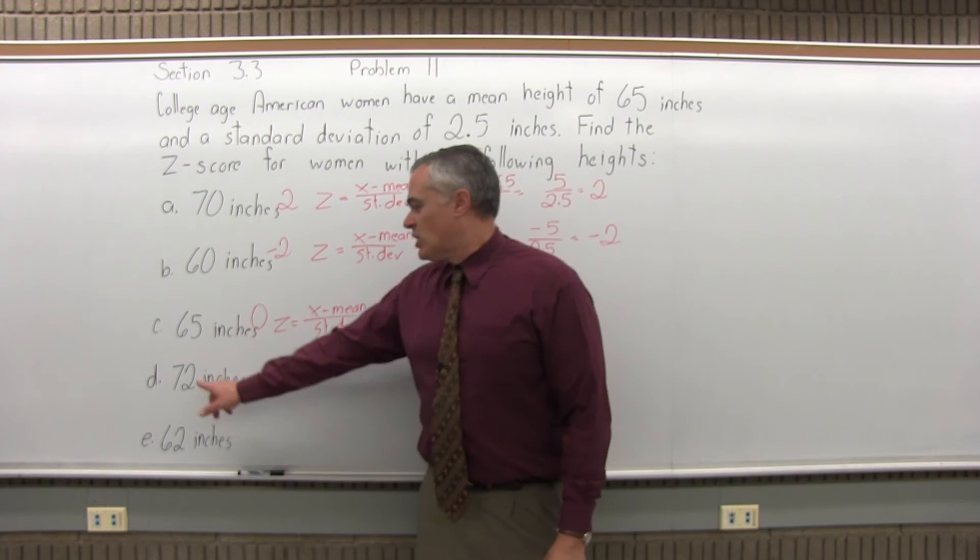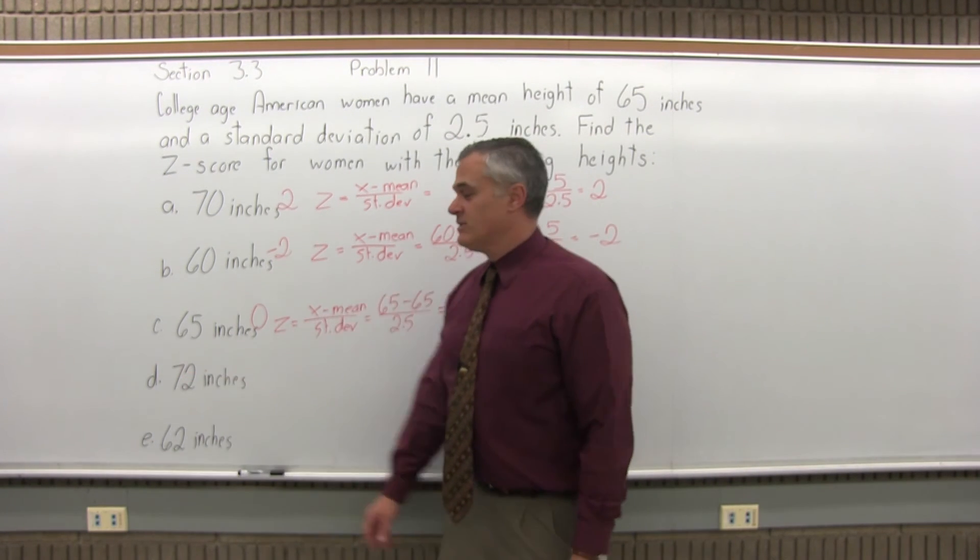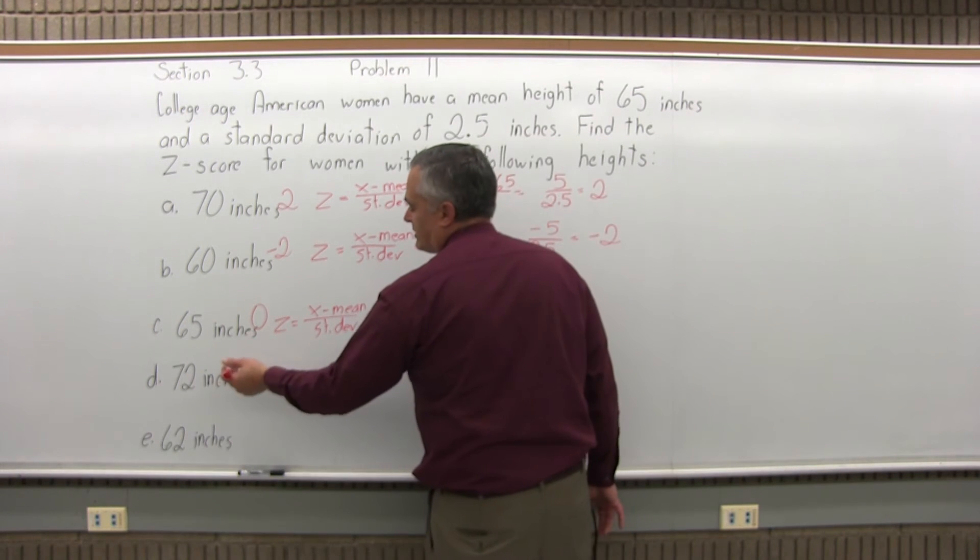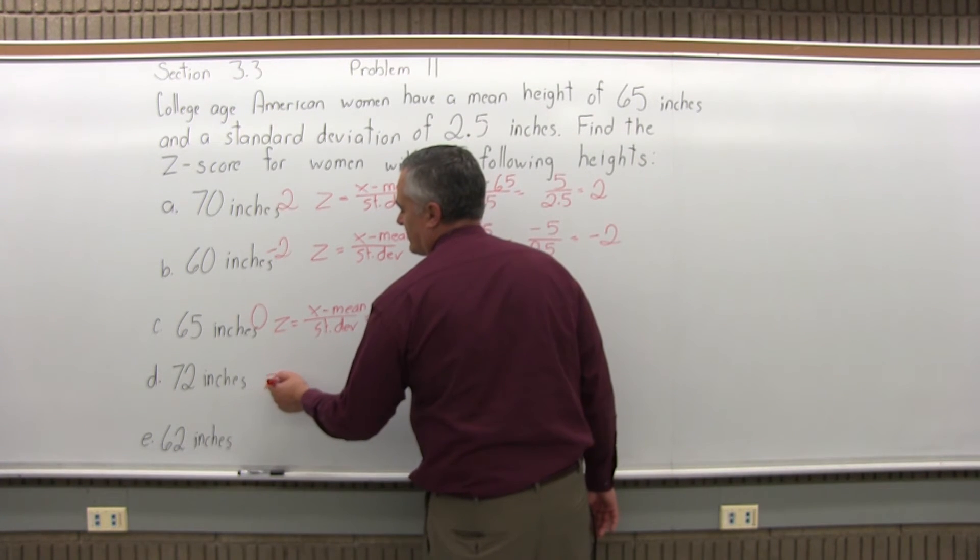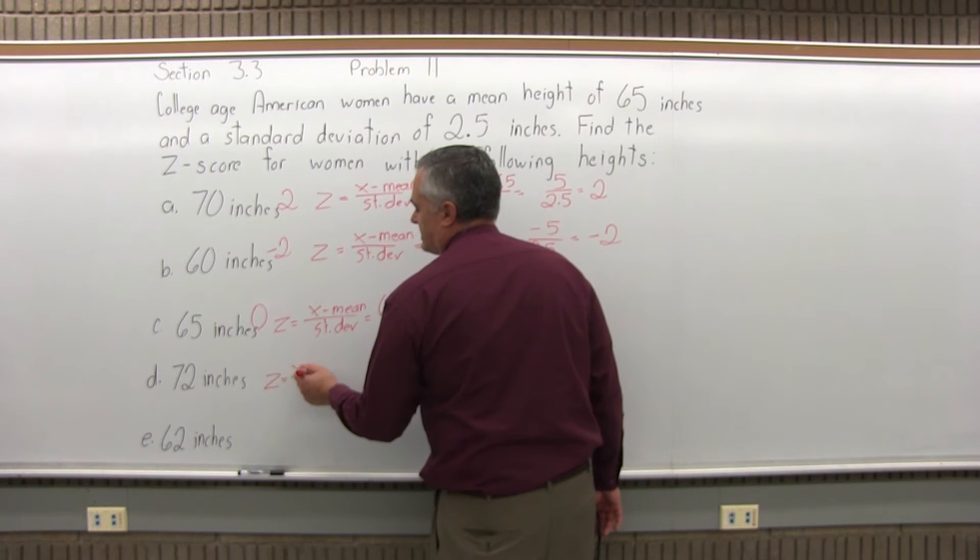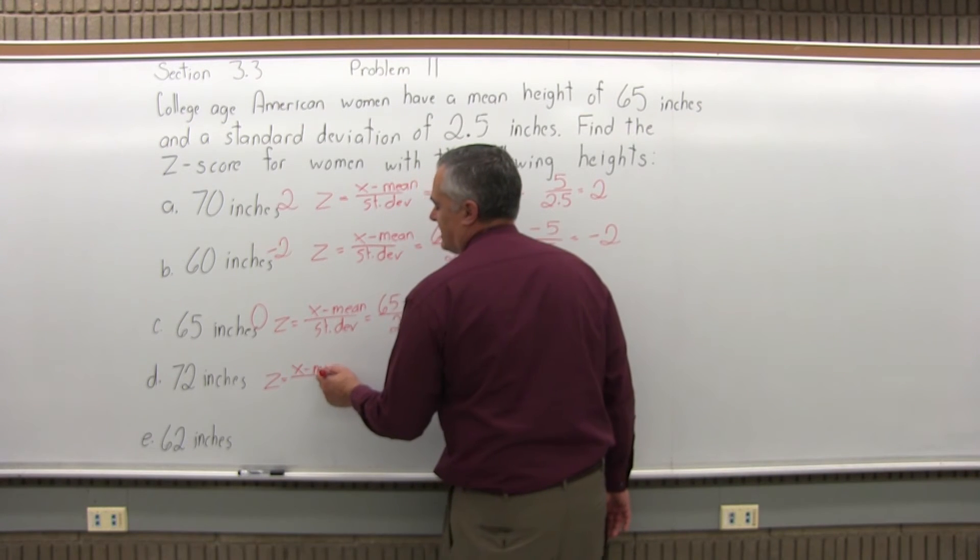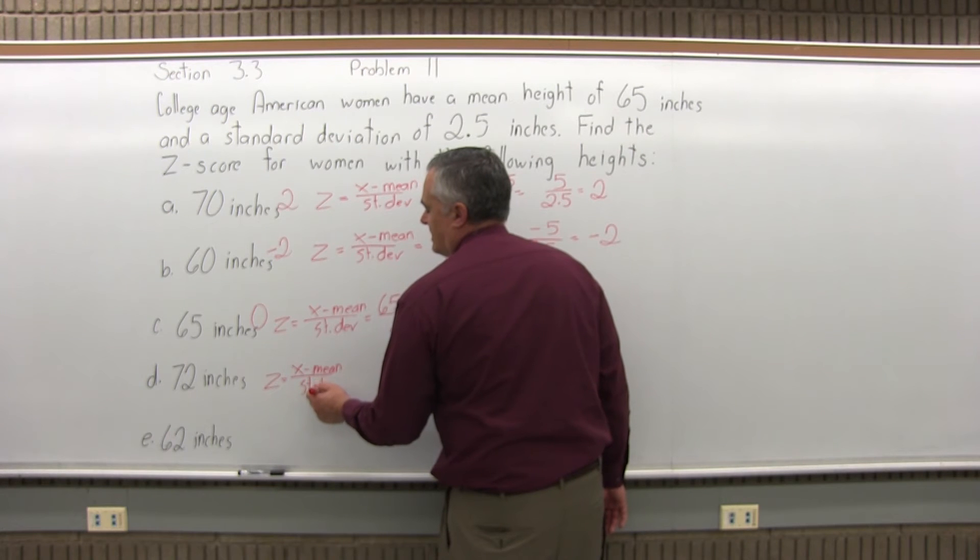Next, 72 inches tall. That's 6 feet tall. That's fairly tall. What's the z-score for a woman who is 6 feet tall or 72 inches tall? Same formula. z equals x minus the mean divided by the standard deviation.